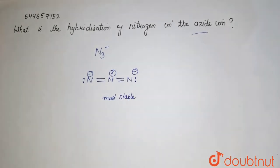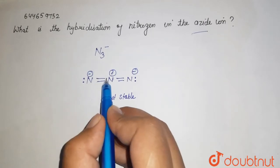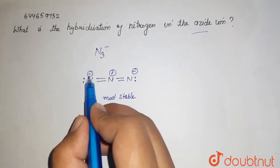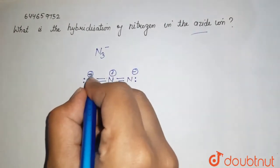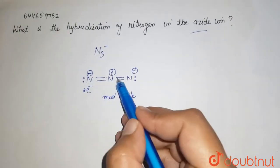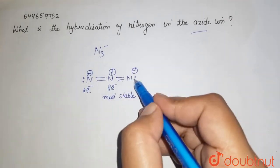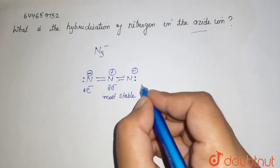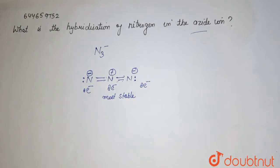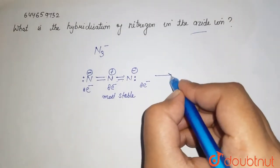This is the most stable structure of N₃⁻. If you see, all species — all nitrogens — have 8 electrons. For this nitrogen: one, two, three, four, five, six, seven, eight — the negative charge is considered as a lone pair, so it is eight electrons. For the middle one: eight electrons. And for this one: one, two, three, four, five, six, seven, eight. So each nitrogen consists of eight electrons, completing the octet. This means it is the most stable structure.